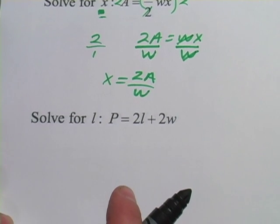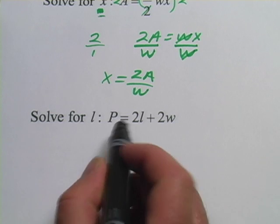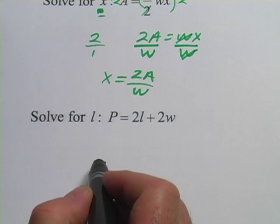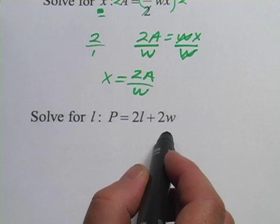Alright, we have one more here. And this should look familiar. P equals 2L plus 2W. This is the formula for the perimeter, the distance around the outside of a rectangle. 2 times the length plus 2 times the width.